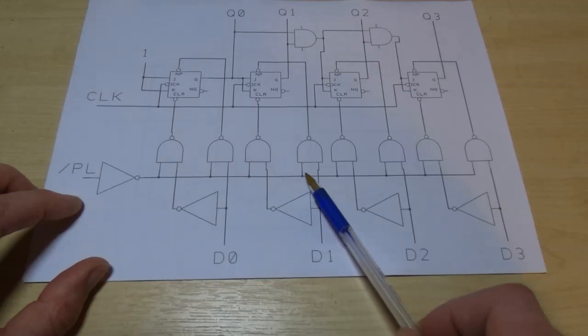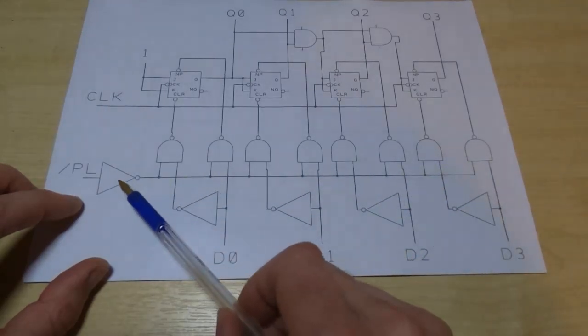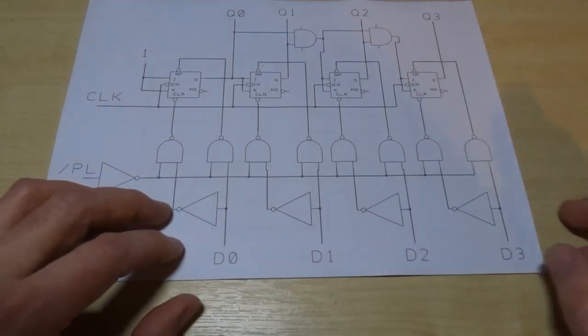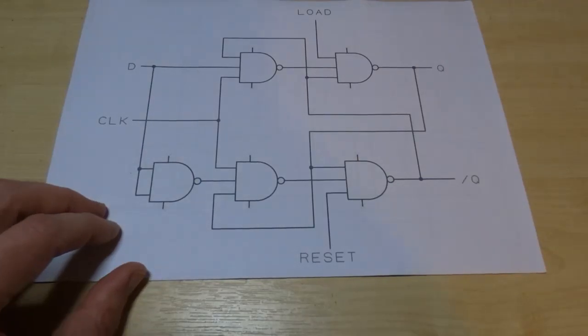The rest of this is just to make sure that we can determine what values we are latching into the flip-flop. Also notice that this line is common across all the bits. All the loads are controlled through a single line. The only thing that's different of course is the inputs are connected to different data lines.